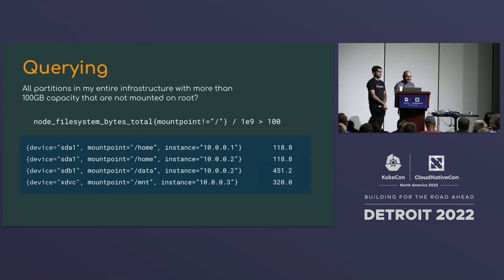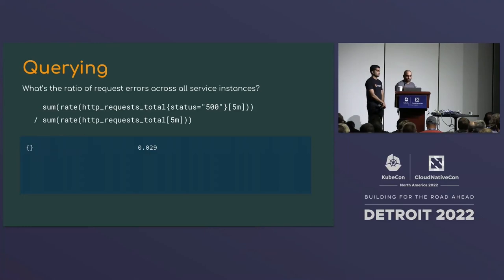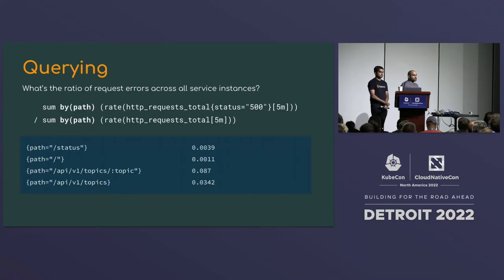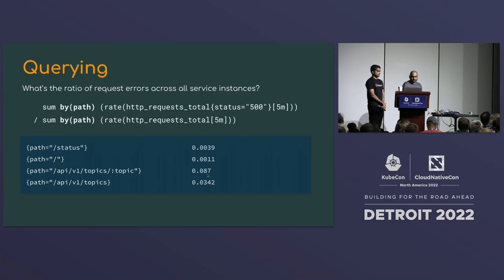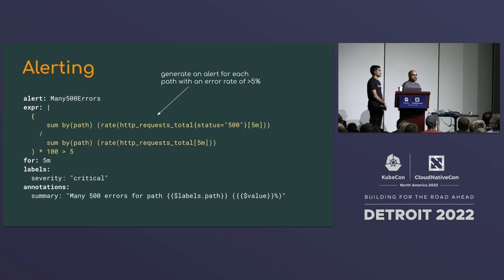Another example: the ratio of errors across all service instances. You take the rate of errors divided by total rate to get the error ratio — about 2.9% here. You can add custom groupings: sum by path, divide by path, and see your worst-performing endpoint. For instance, the topics endpoint has about 9% errors. You can then write an alert query and dive into dimensions to understand the root cause.